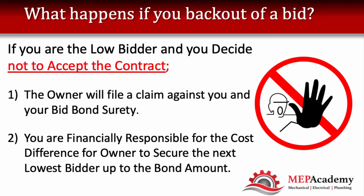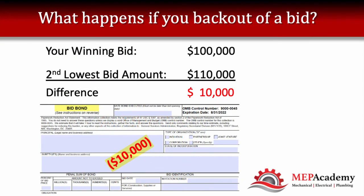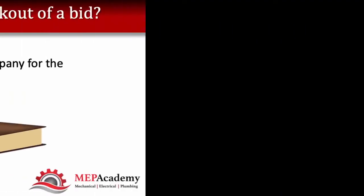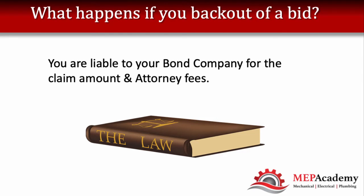If you're a small company, most likely you put up some form of collateral or personal guarantee. You're personally and financially responsible for the cost difference for the owner to secure the next lowest bidder, up to your bond amount. So if you bid a hundred thousand dollars and the next lowest bidder was a hundred and ten thousand, and your bid bond was ten percent, your liability is the difference — ten thousand dollars — if you decide not to execute the contract. If you back out, you're liable to your bond company for the claim amount plus attorney fees.